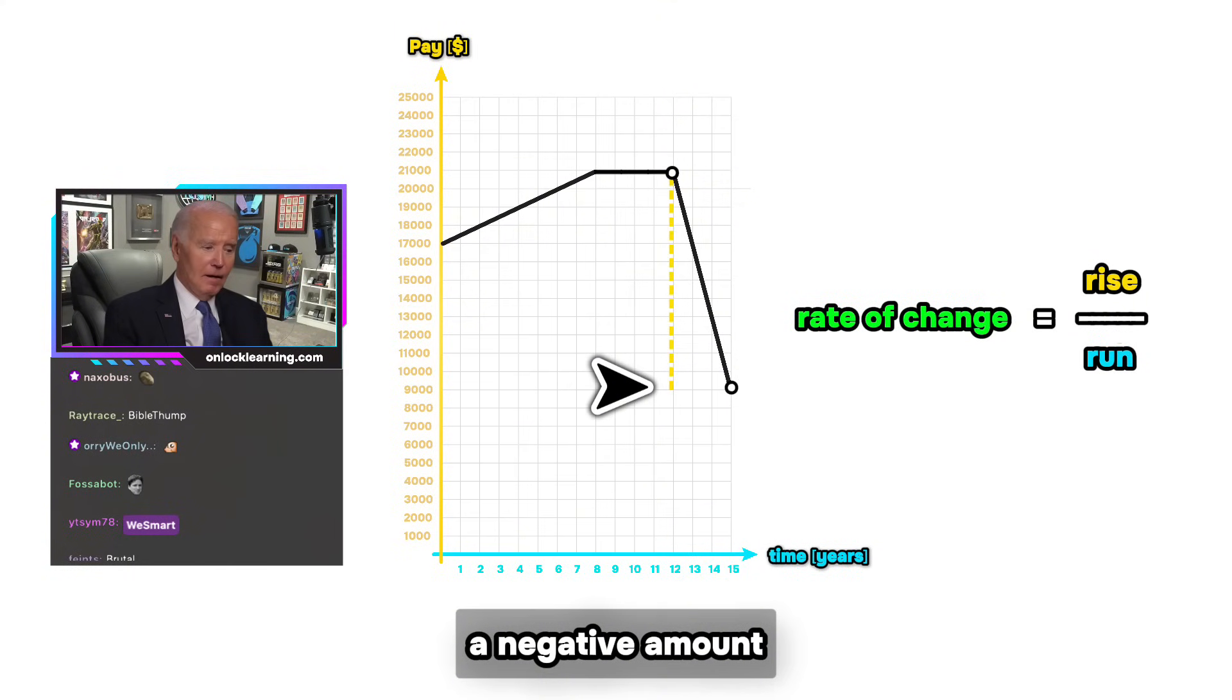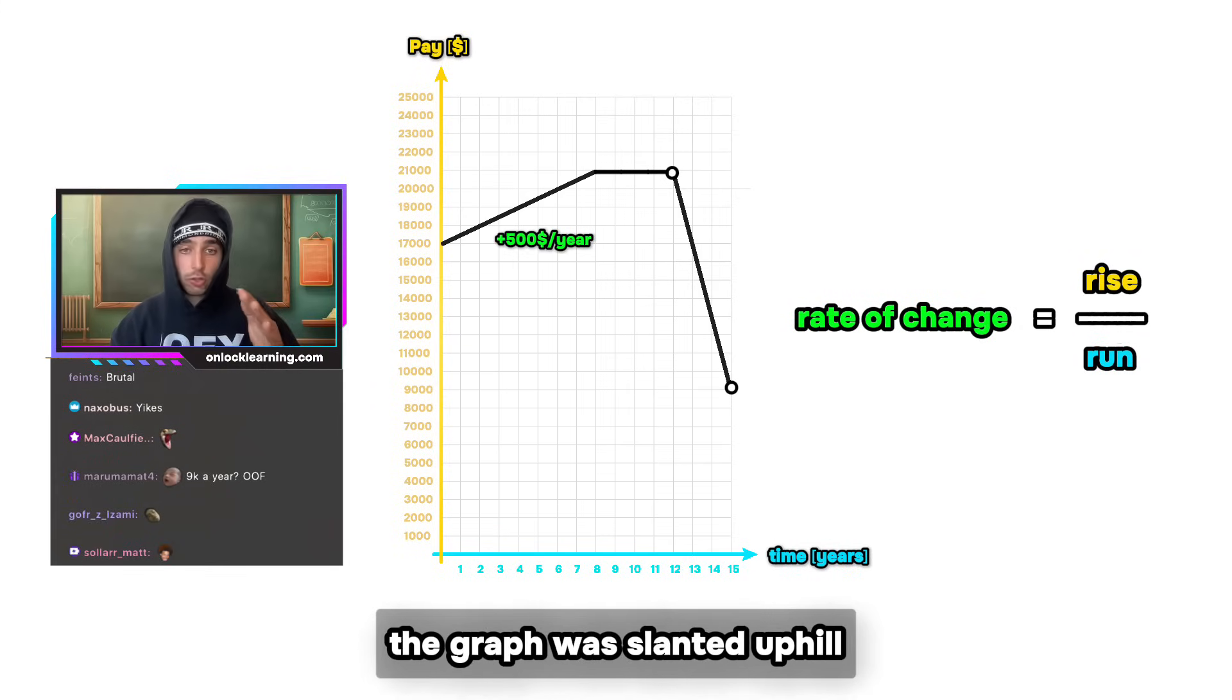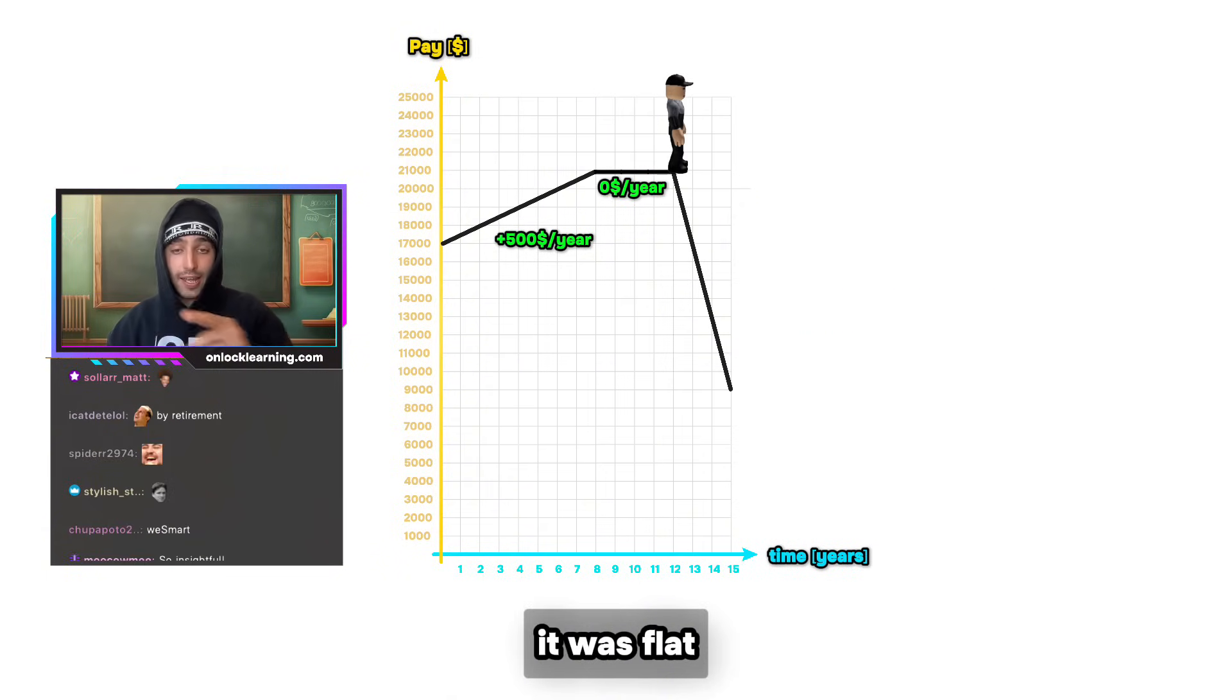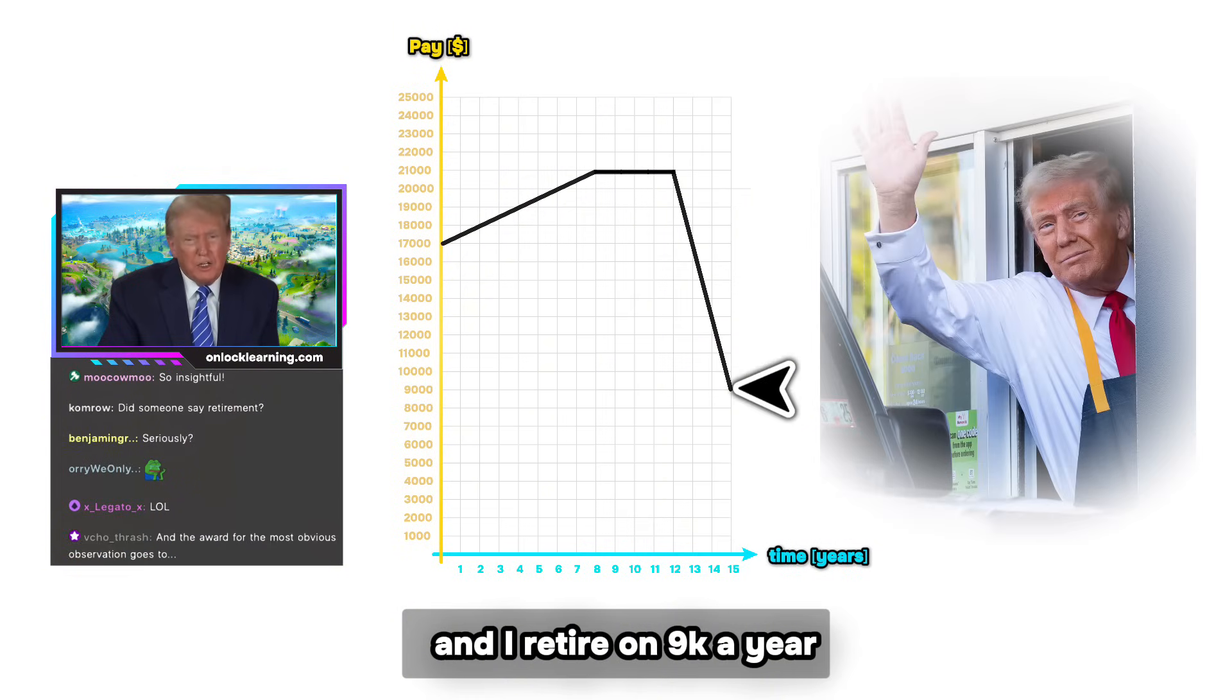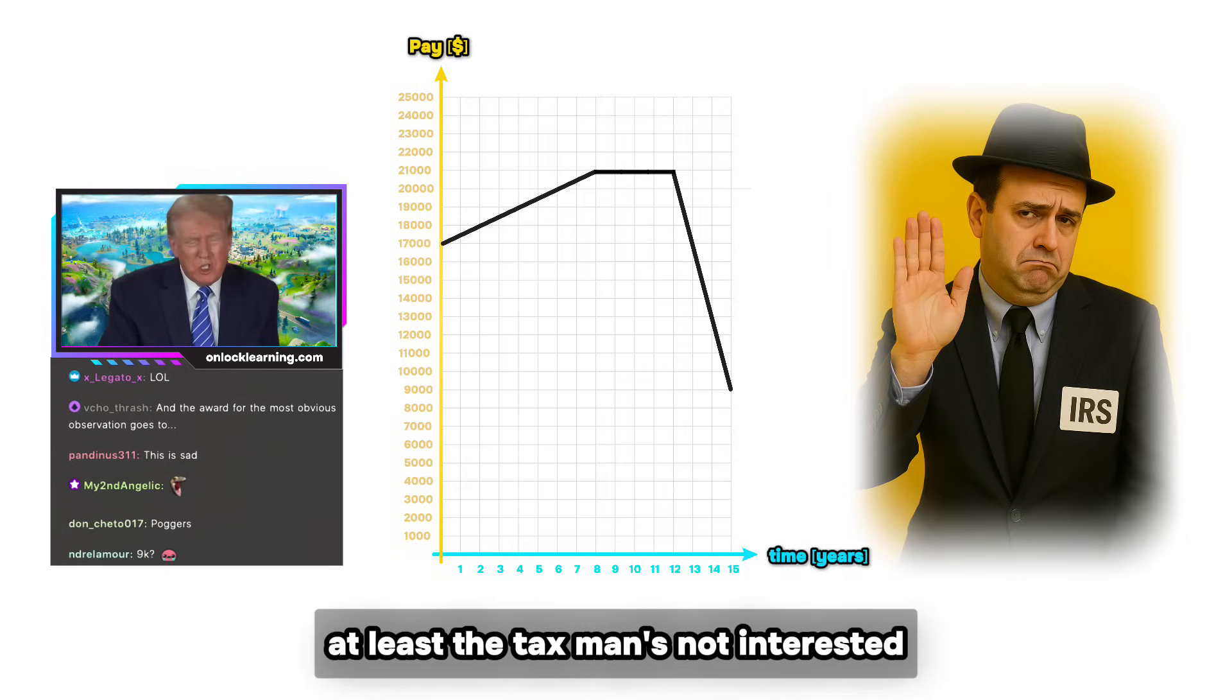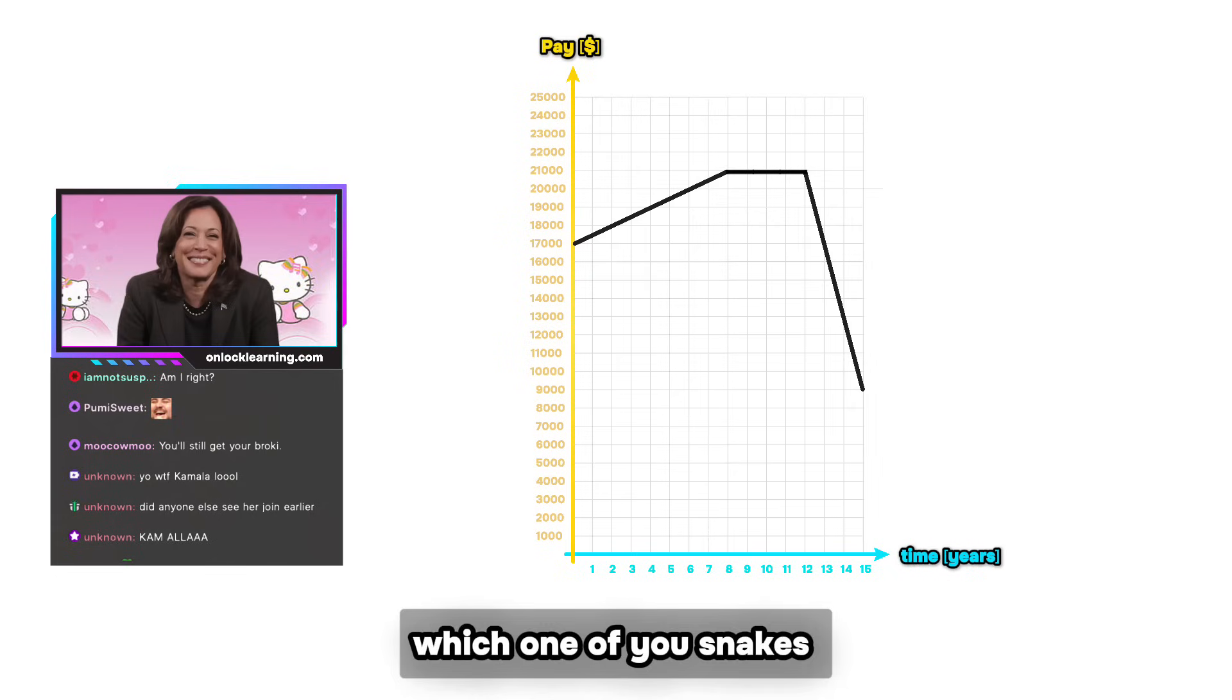I like that Joe, very smart. Yo, I just noticed when the rate was positive the graph was slanted uphill, when the rate was zero it was flat, and when it was negative it was downhill. Bullseye. I was 15 years on the job and I retire on 9k a year. Living the dream. At least the tax man's not interested, am I right? You'll still get your brokey. Which one of you snakes let her join? Was it you Joe? She kept begging me on WhatsApp, I'm sorry. Settle down.